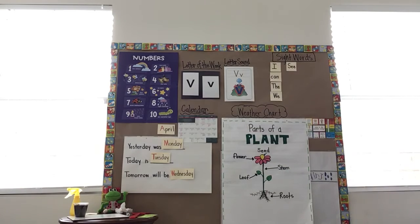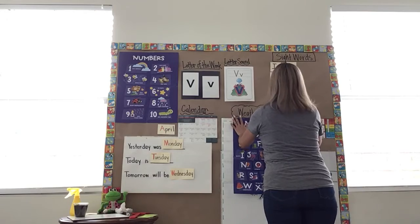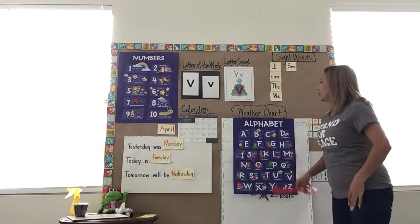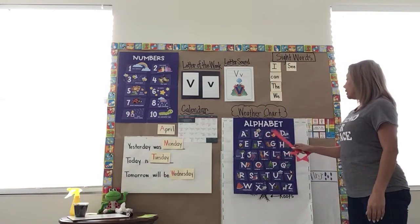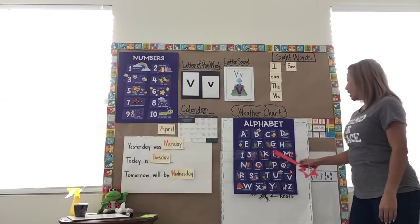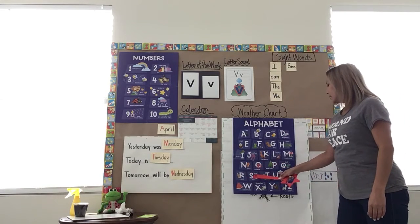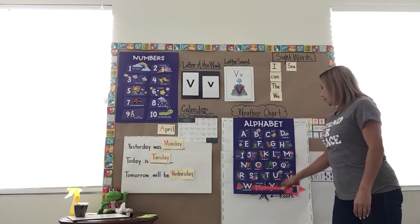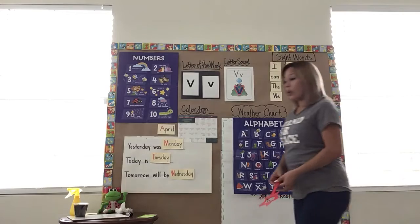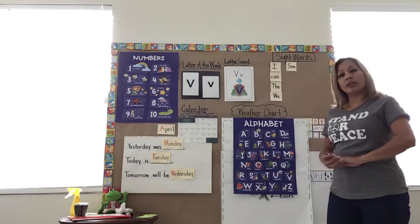Let's do our ABCs. Please sing with me — Mom and Dad, you should know the ABCs, so sing with us. A, B, C, D, E, F, G, H, I, J, K, L, M, N, O, P, Q, R, S, T, U, V, W, X, Y, and Z. Now I know my ABCs, next time won't you sing with me.